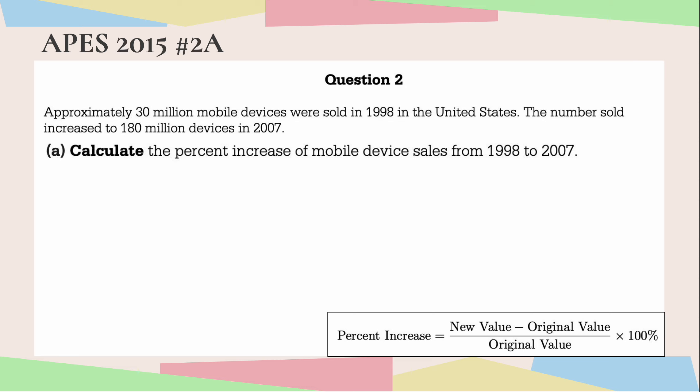Approximately 30 million mobile devices were sold in 1998 in the United States. The number sold increased to 180 million devices in 2007. Part A: Calculate the percent increase of mobile device sales from 1998 to 2007.